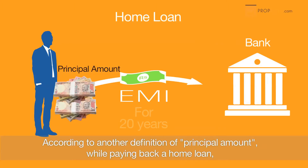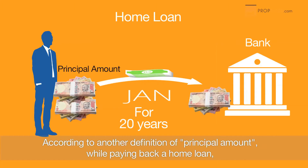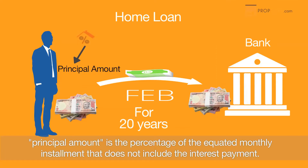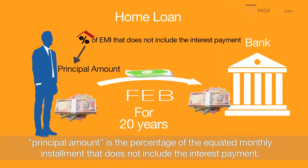According to another definition of principal amount, while paying back a home loan, principal amount is the percentage of the equated monthly instalments that does not include the interest payment.